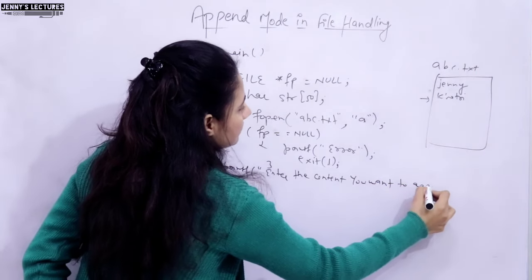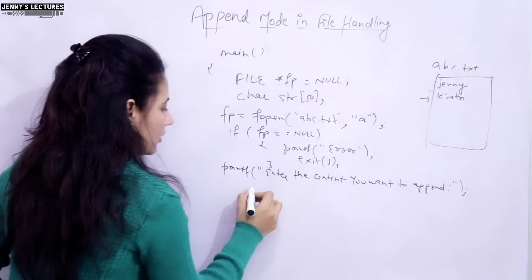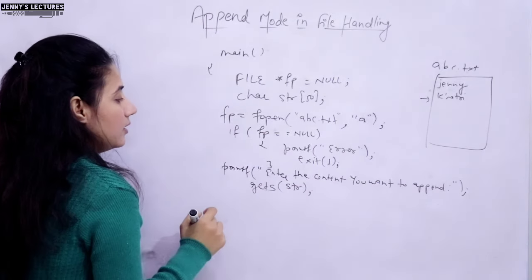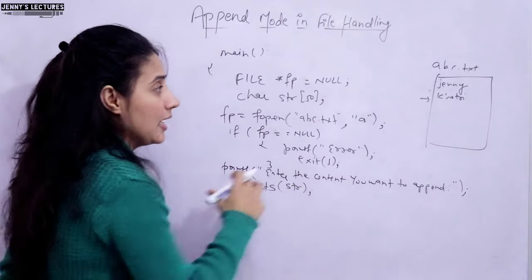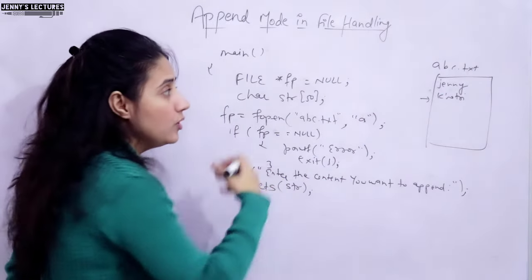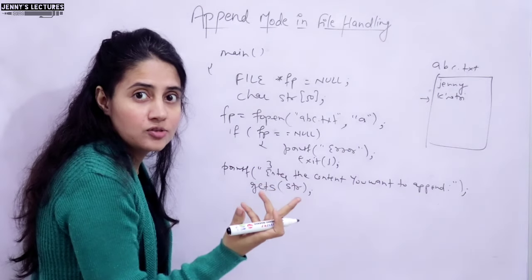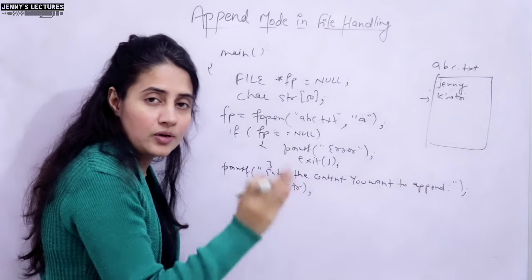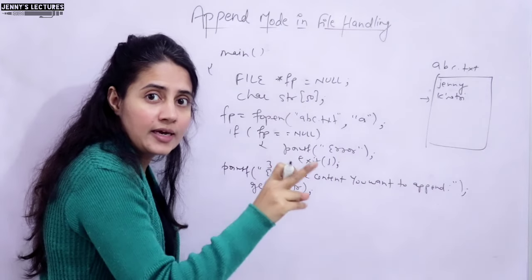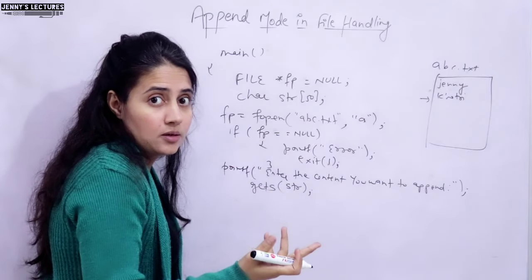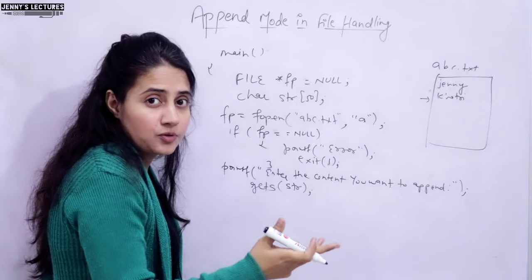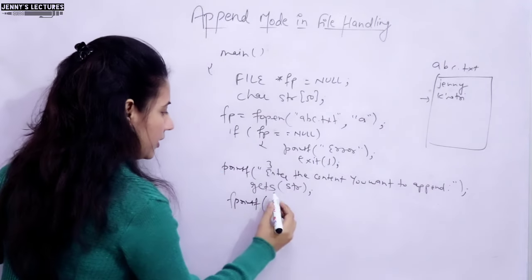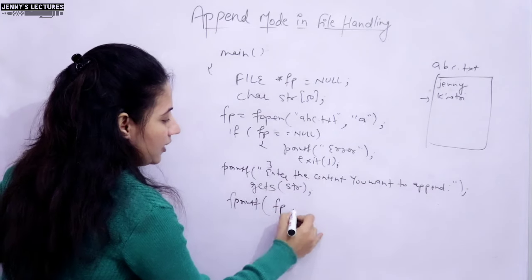If fopen successfully opens the file, we ask the user to enter the content to append, and read it using fgets or gets. To write the content to the file, we have several options: fputc for a single character in a loop, fputs for a string, or fprintf — whatever function you want to use.